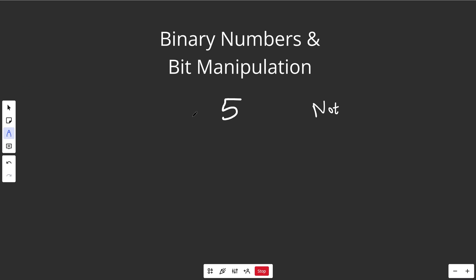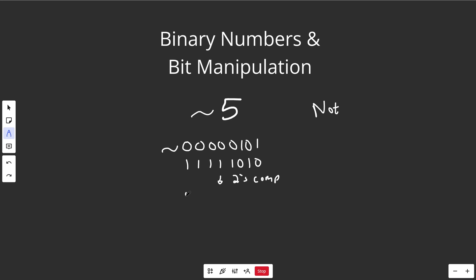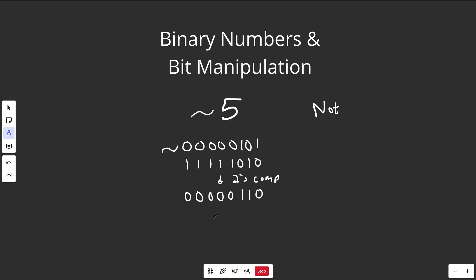Now let's do the NOT operator, marked by a tilde. It's called a unary operator. So tilde 5 means flip the bits. If 5 is 00000101, then NOT that would flip to 11111010. This is annoying because it's now a negative number since the sign bit is 1. To convert from 2's complement, flip the bits back to 00000101 and add 1 to get 00000110. That is 2 to the 2 plus 2 to the 1, equal to 6 — but we know it's really negative 6. So the answer to tilde 5 is negative 6.